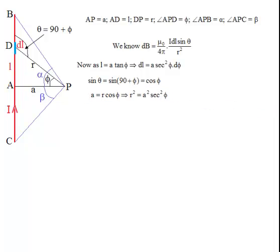Substituting these values into Biot-Savart law: dB = (μ₀/4π)I · (a sec² φ dφ) · cos φ / (a² sec² φ), which simplifies to dB = (μ₀/4π)(I/a) cos φ dφ.